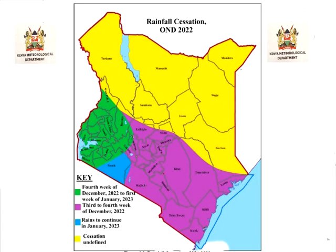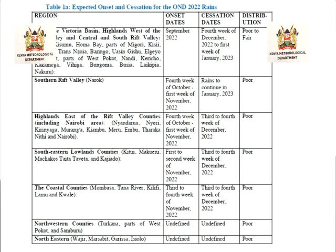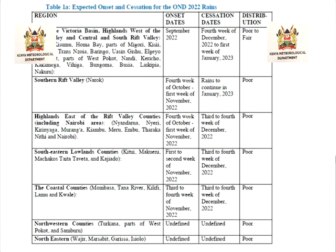Several parts of the areas west of the Rift Valley, the Lake Victoria Basin, the central and south Rift Valley, will continue to receive light rains in September. In the table, the first column indicates the region, the second the onset dates, the third the cessation dates, and the last column the expected distribution — which is going to be poor compared to what we are used to seeing during the season in those specific areas.